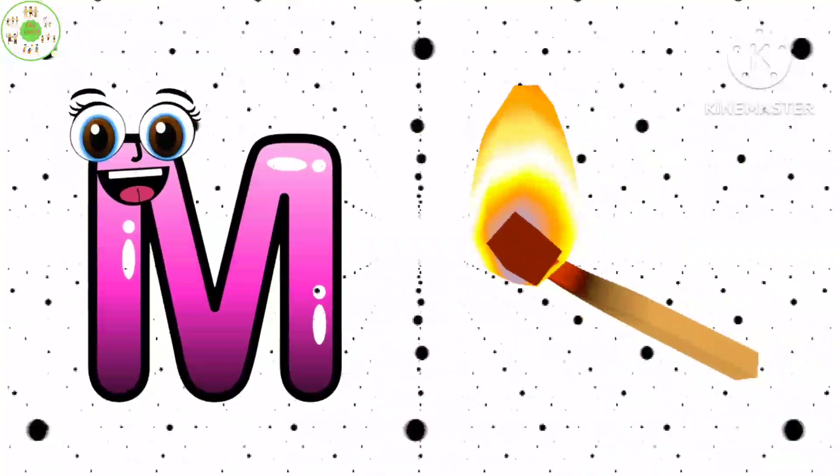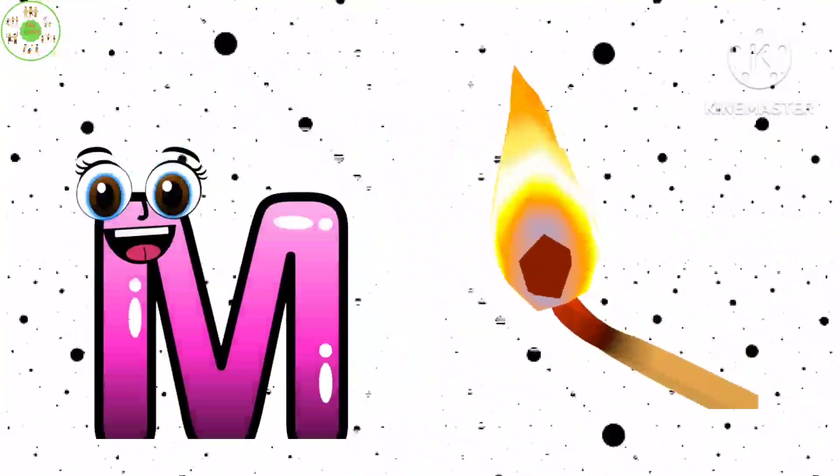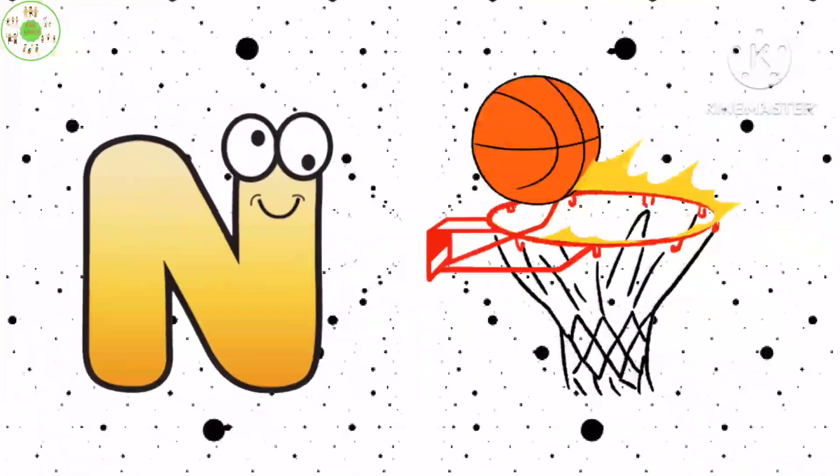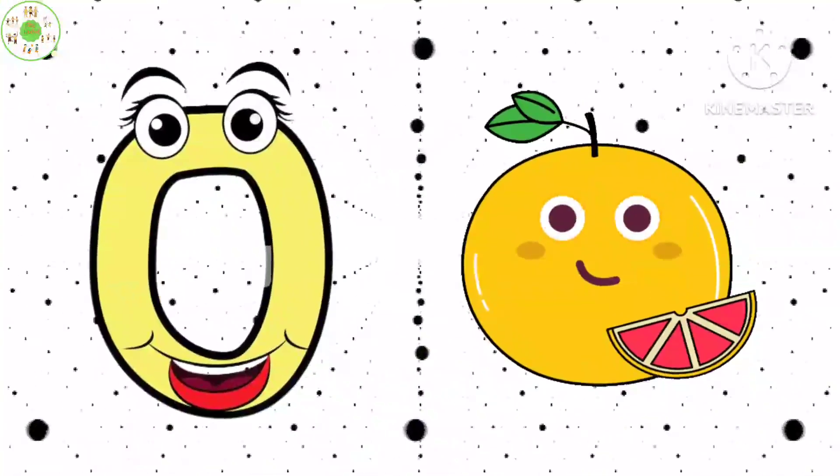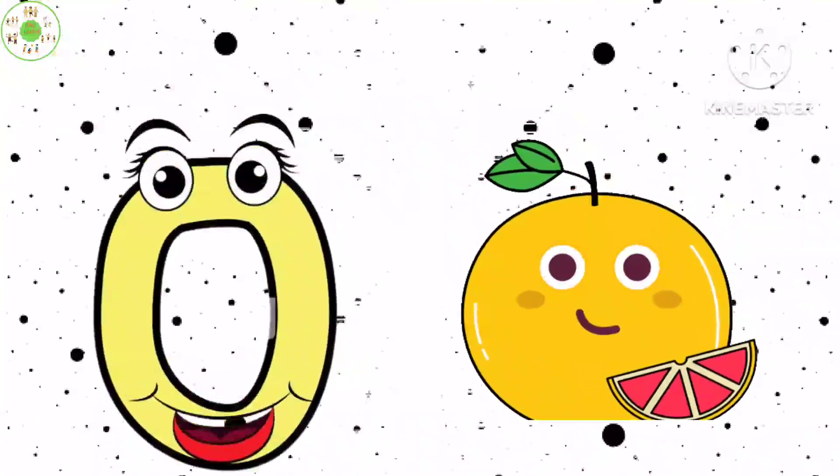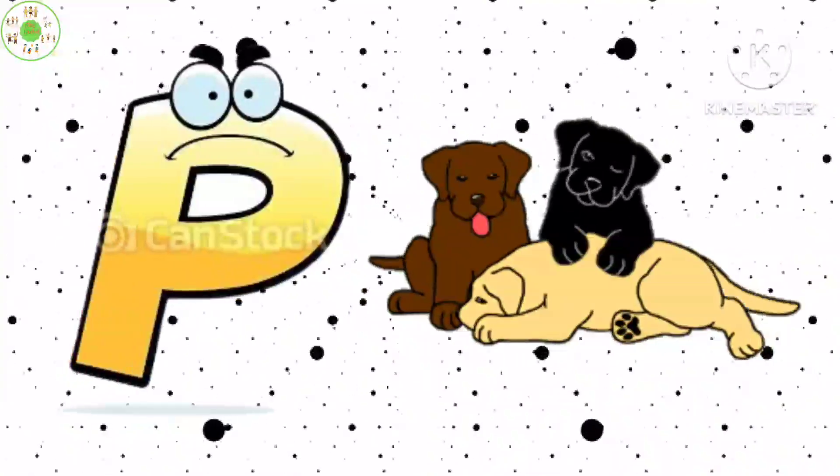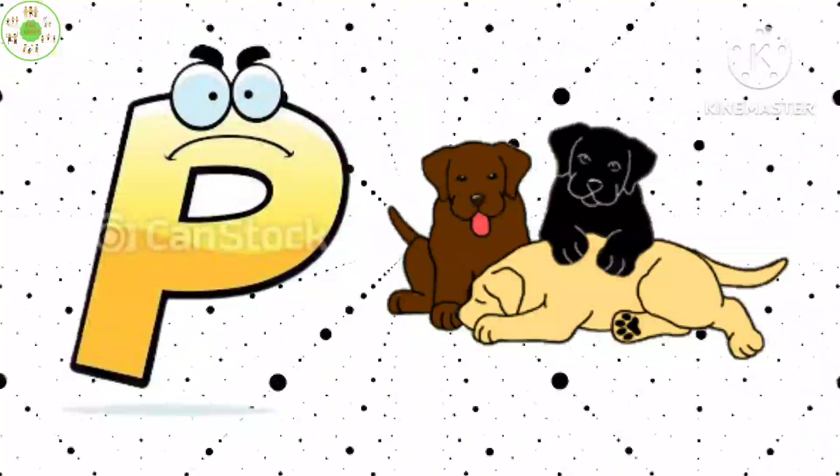M is for Mat, M-M-Mat. N is for Net, N-N-Net. O is for Orange, O-O-Orange. P is for Pet, P-P-Pet.